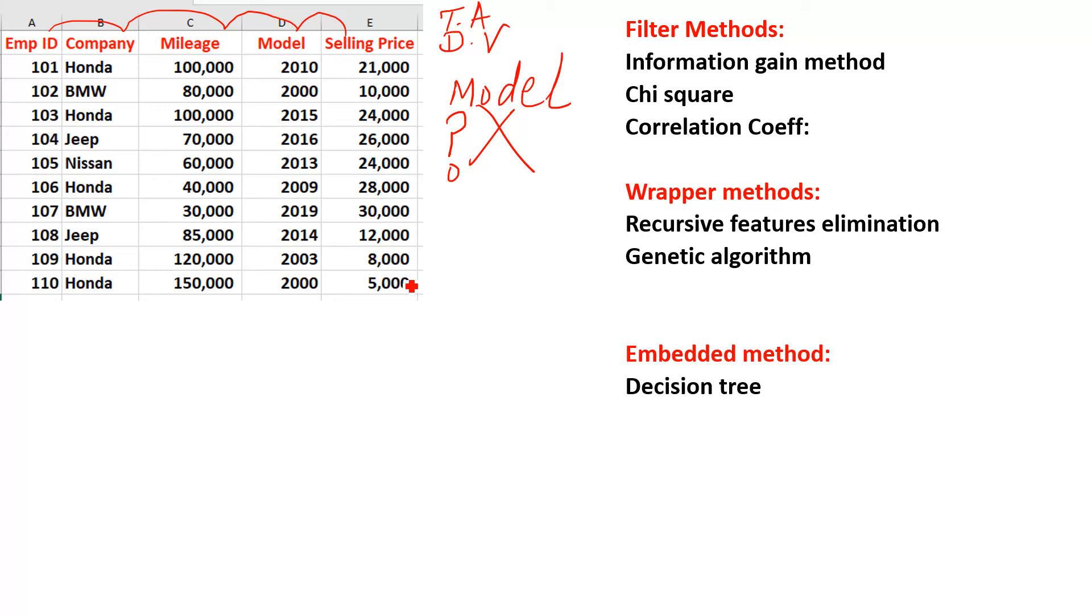Here you can take the example of model and selling price. As the model increases, the year of the model increases, the selling price also increases. So there is a relation between these two. We have to select those features which are directly related to our target attribute. For that purpose, to get those features, we can have different methods.